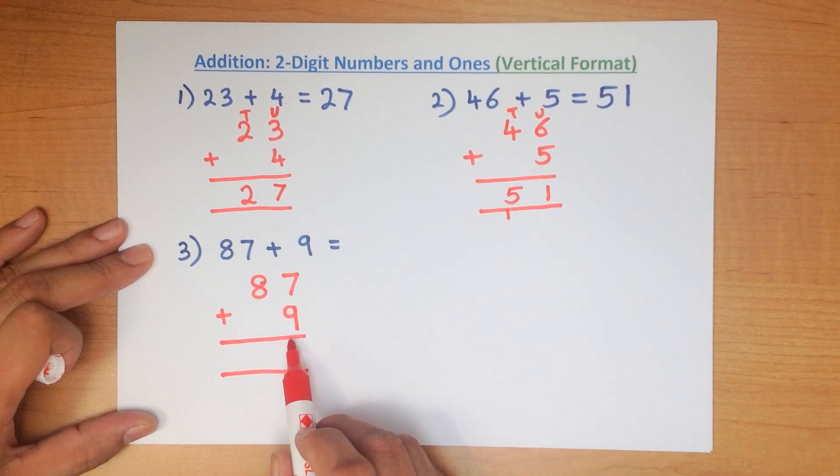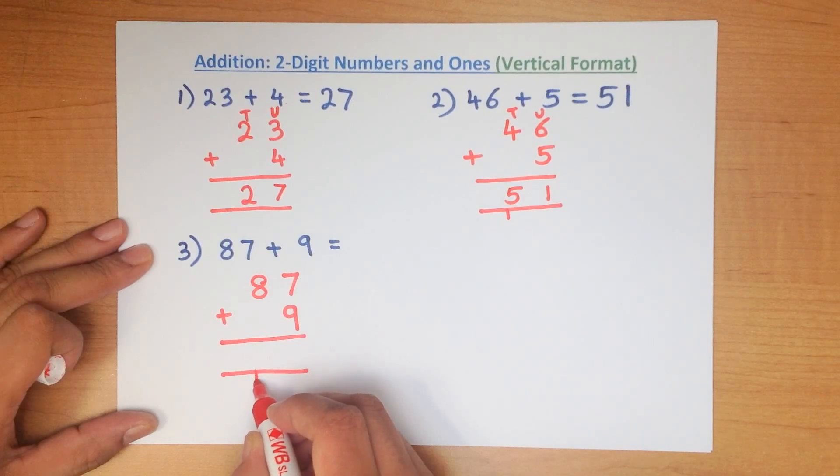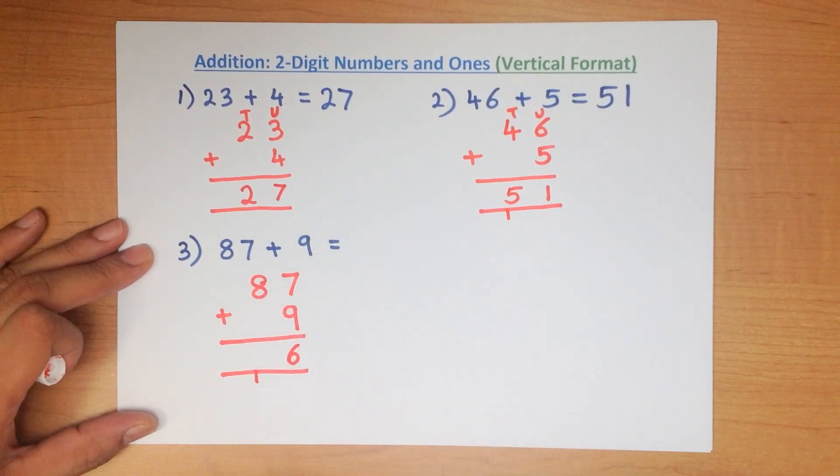So what is 7 plus 9? That's right, it is 16. How do we write that down? We put 1 here and the 6 over here. This one is now part of the tens column.